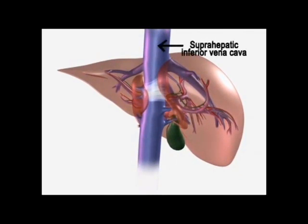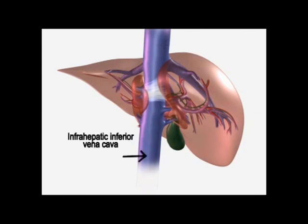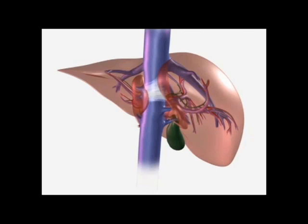Below the liver, the inferior vena cava lies behind the duodenum and head of the pancreas, passing upwards behind the foramen of Winslow, posterior to the right hilar structures of the liver. Behind the liver, the inferior vena cava is embraced in a groove on its posterior surface. The inferior vena cava comes to lie on the right crus of the diaphragm, behind the bare area of the liver, and then extends to the central tendon of the diaphragm, which it pierces on a level with the body of the T8 vertebra, to then enter the right atrium.